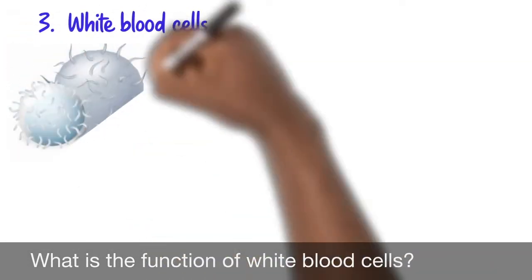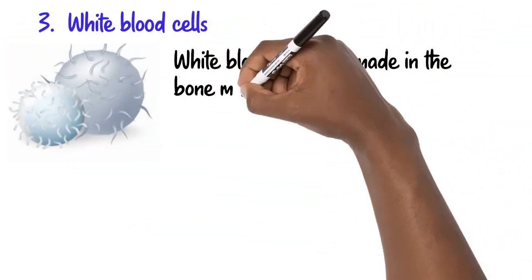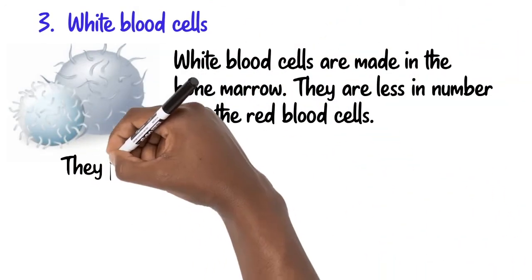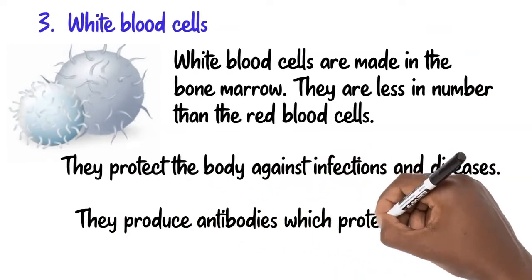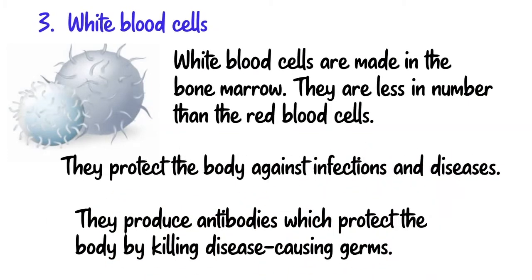White blood cells are made in the bone marrow. They are less in number than the red blood cells. They protect the body against infections and diseases. They produce antibodies which protect the body by killing disease-causing germs.